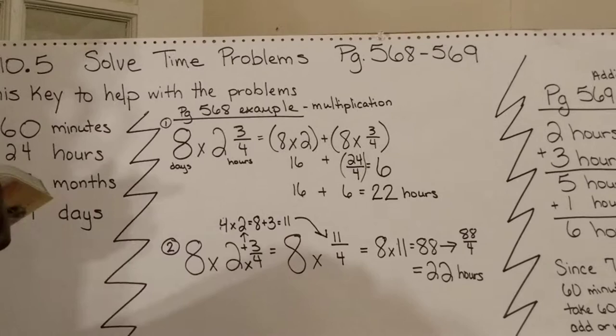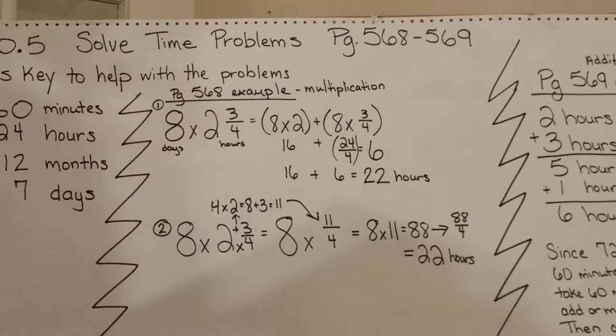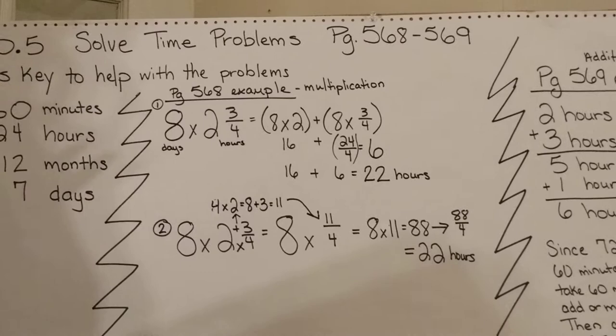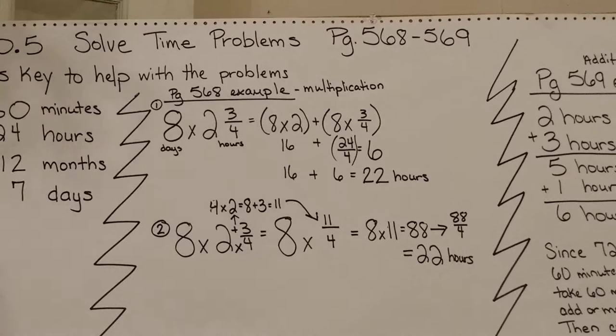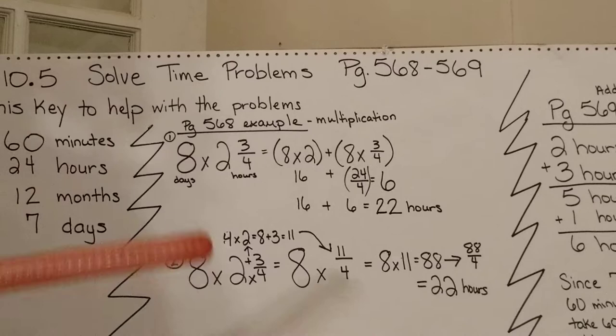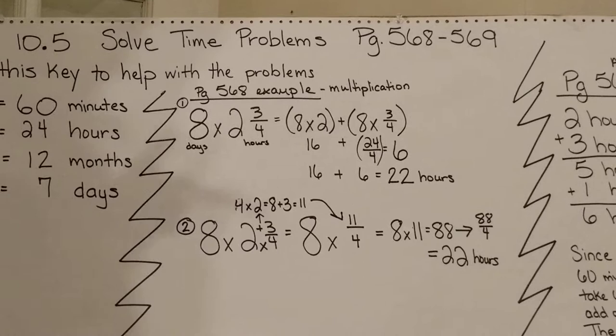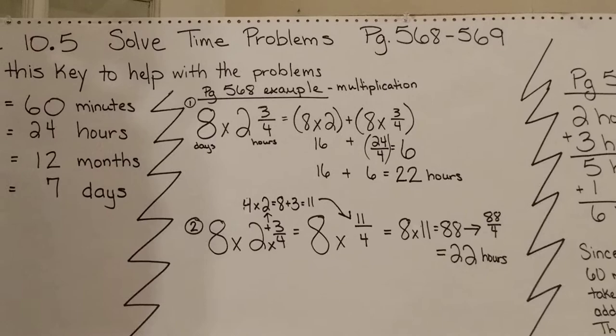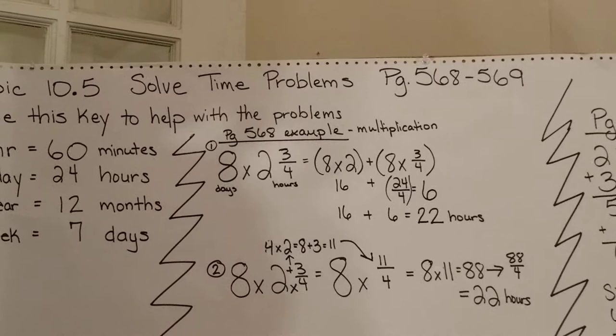You can use properties of operations to help solve these problems. We're going to use multiplication to figure out how long Crystal trained. I have the problem set up here, 8 times 2 and 3/4.